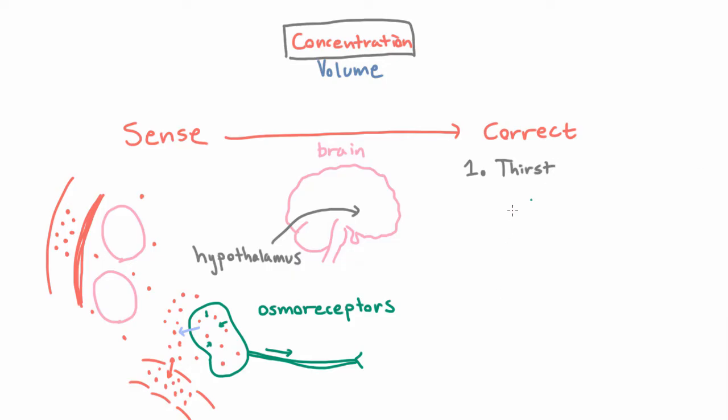And how does this happen? Well, we already have an osmoreceptor here in the brain that's been activated by the change in concentration, so it just sends a signal to another nearby part of the brain that causes you to become more thirsty.